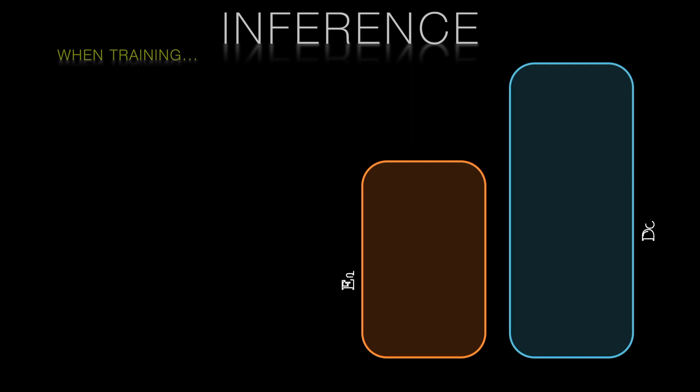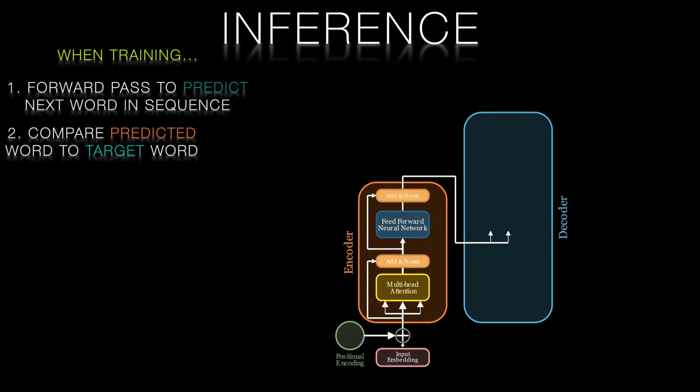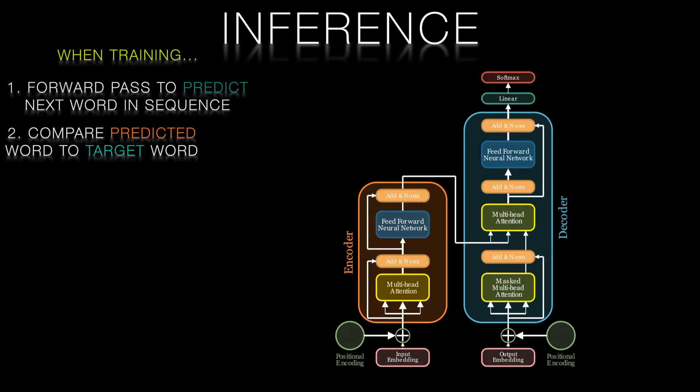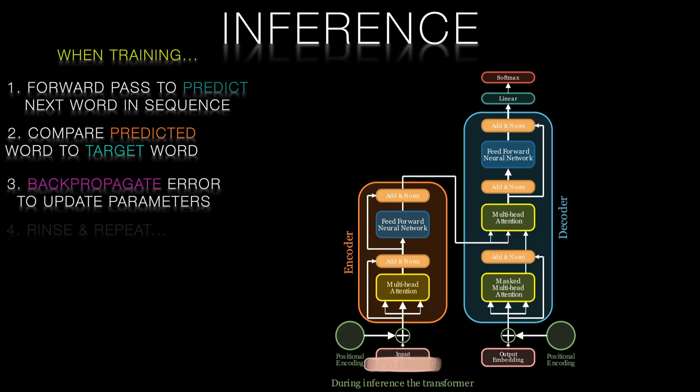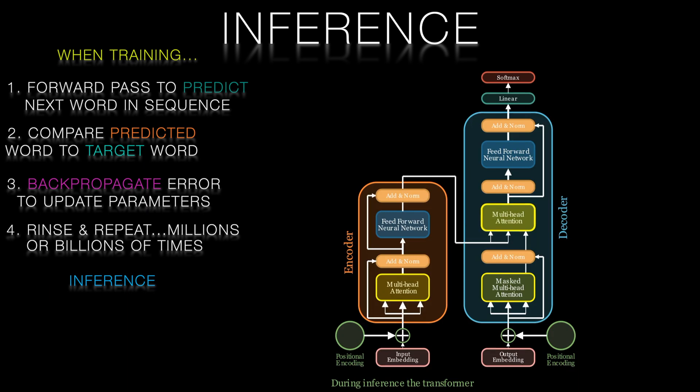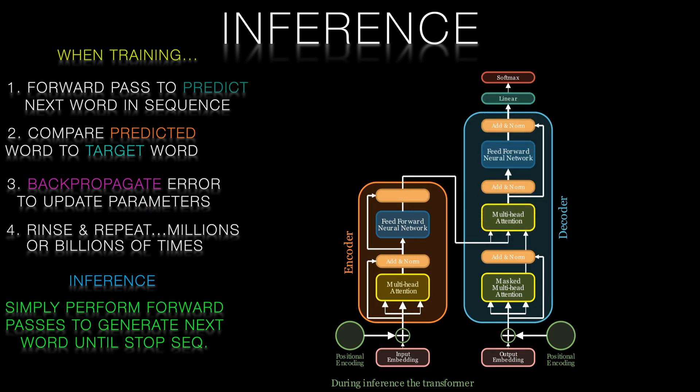Having looked at training, inference is much simpler. When we're training, we follow each forward pass with a back propagation step to update the weights in the transformer. With inference we just have forward passes to get the next word. There's no teacher forcing during inference.